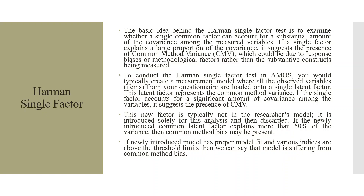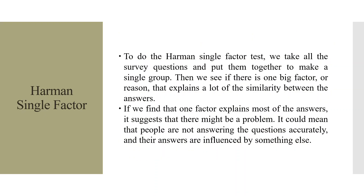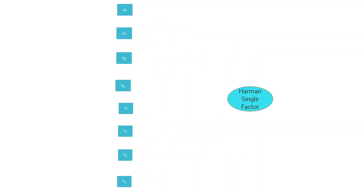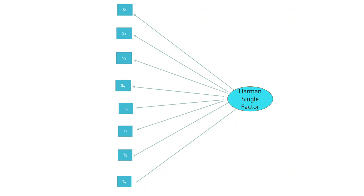If the newly introduced common latent factor explains more than 50% of the variance, then common method bias may be present. If the newly introduced model has a proper model fit with indices above threshold limits, then we can say the model is suffering from common method bias. For example, loyalty has been captured with statements S1, S2, S3, S4, and satisfaction with statements T1, T2, T3, T4. To implement Harman single factor, all statements are loaded onto a single factor.